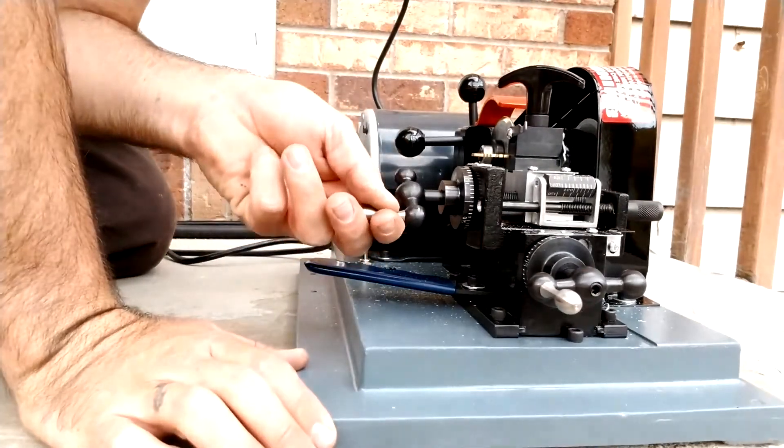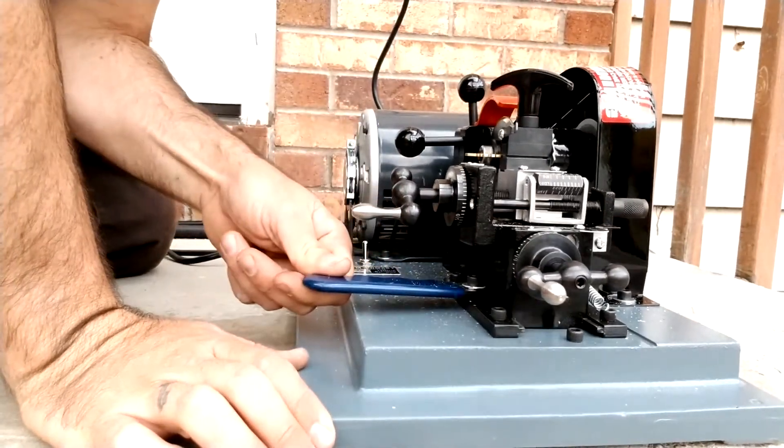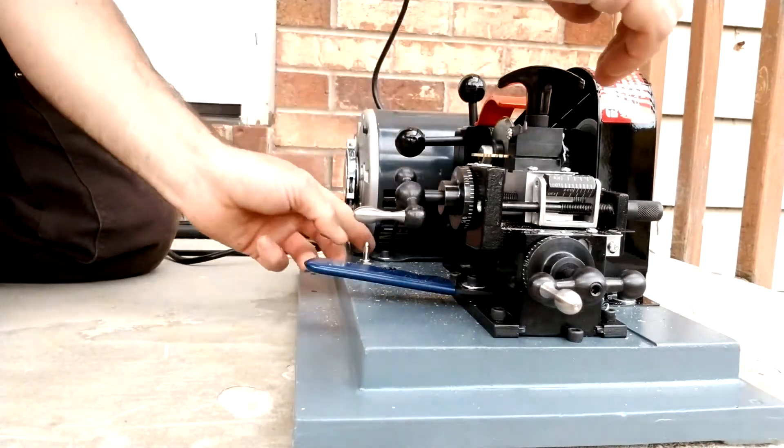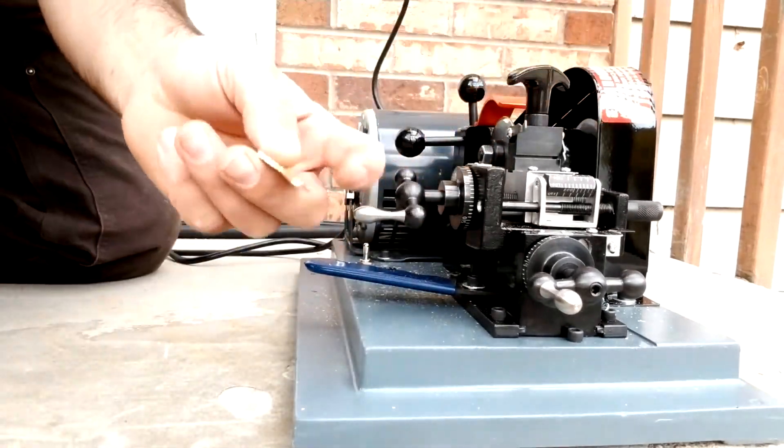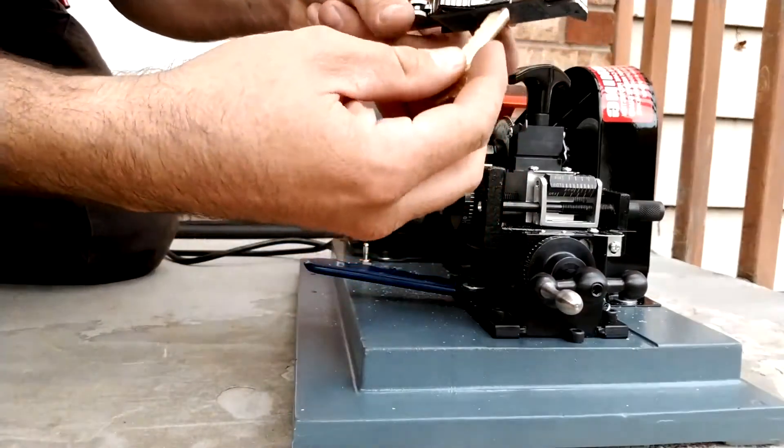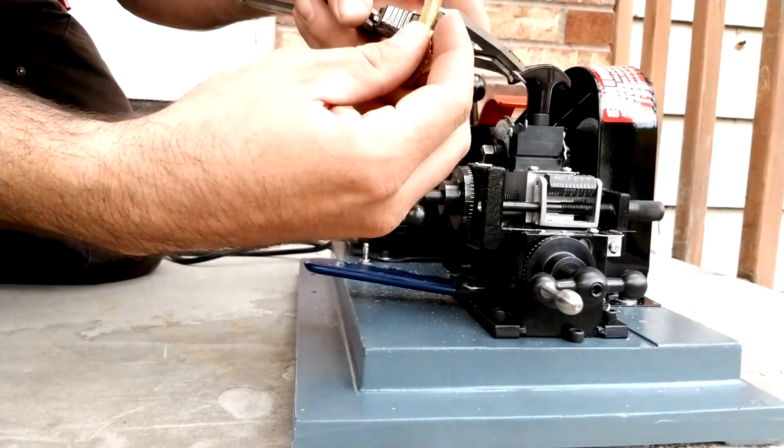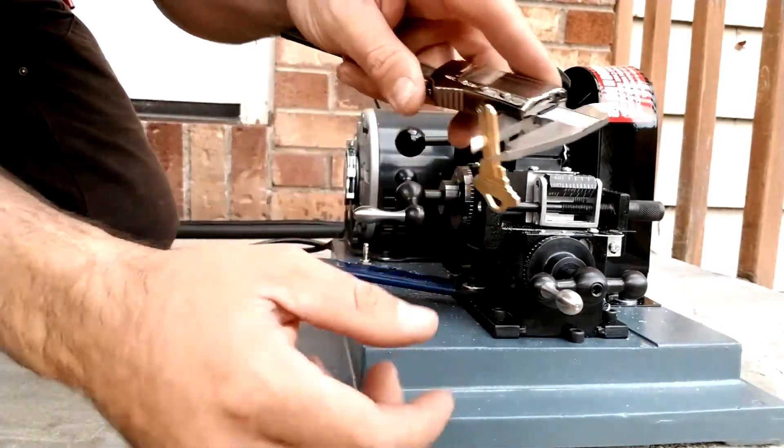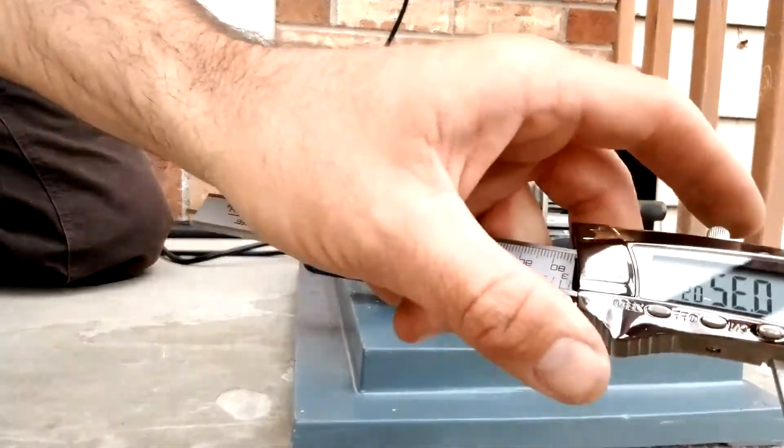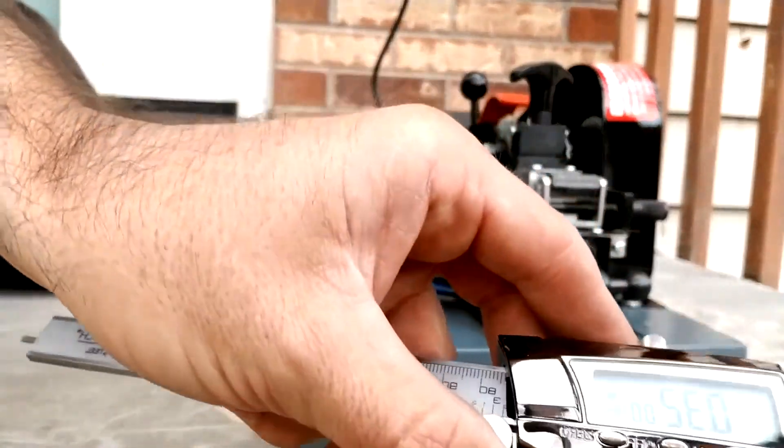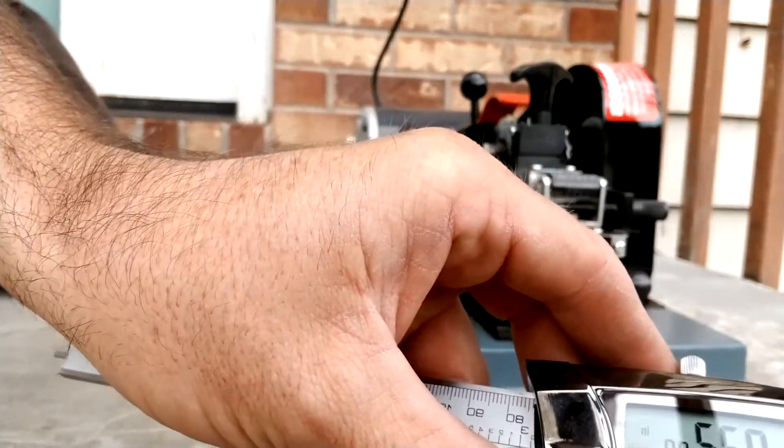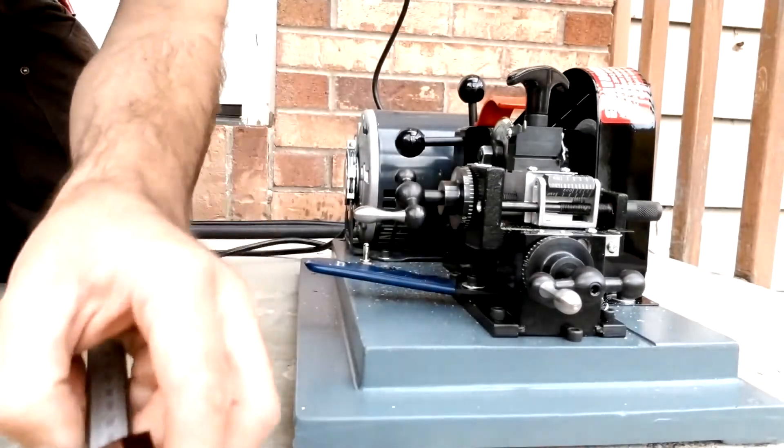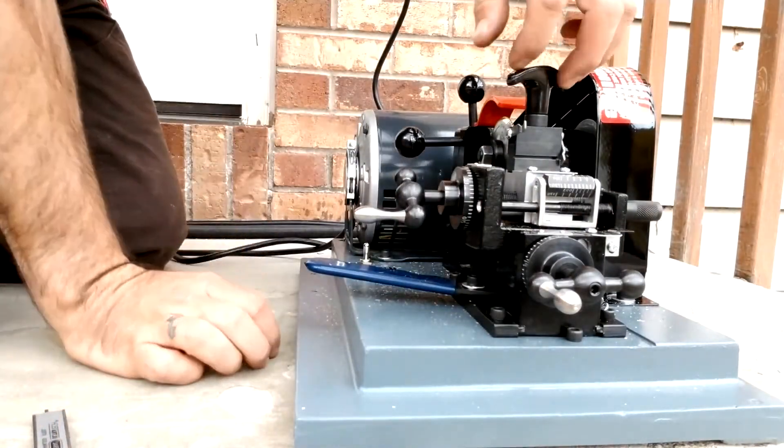Cut the number three spacing, number one cut, number three spacing. Okay, turn that off. We're gonna measure it: 3205, right on the money, 32 dead even. So now I'm gonna do the same thing after we drop the machine.